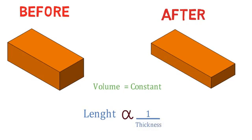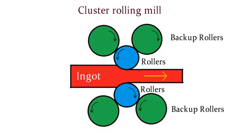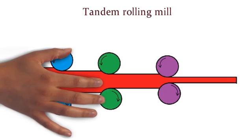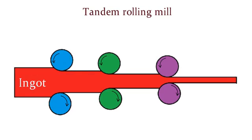And the last is tandem rolling mill. In this type of rolling mill, metal stock is continuously passing through different pairs of rollers so that we can obtain the desired shape and size of the component in one pass only.